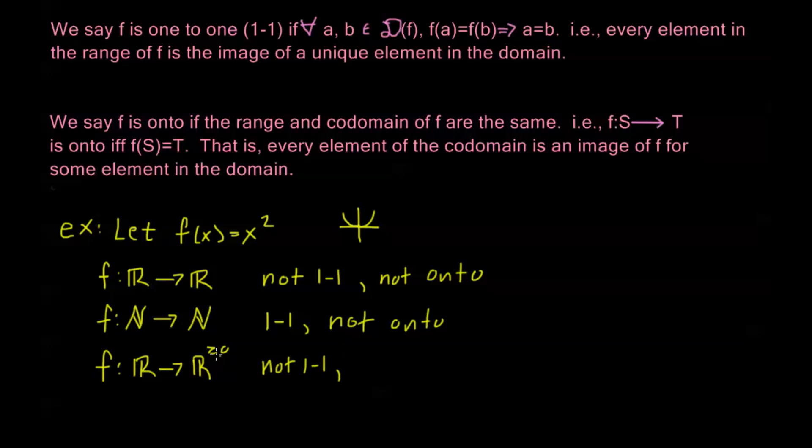However, now look, my codomain is all real numbers greater than or equal to 0. And we already decided that's exactly what my range is. My range is all these y values that are here, and that's going to be from 0 up infinitely. So that's all non-negative real numbers. So this is onto.